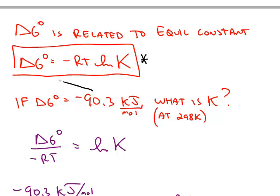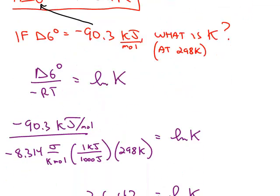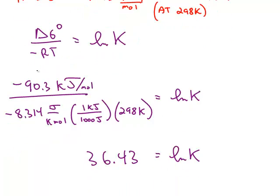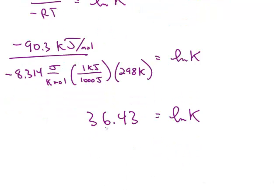So last time we found delta G standard, we can calculate K. So if I make these substitutions, notice the negative sign on delta G cancels the negative sign on R. So when delta G standard is negative, I'm going to end up getting a positive value for the natural log of K.